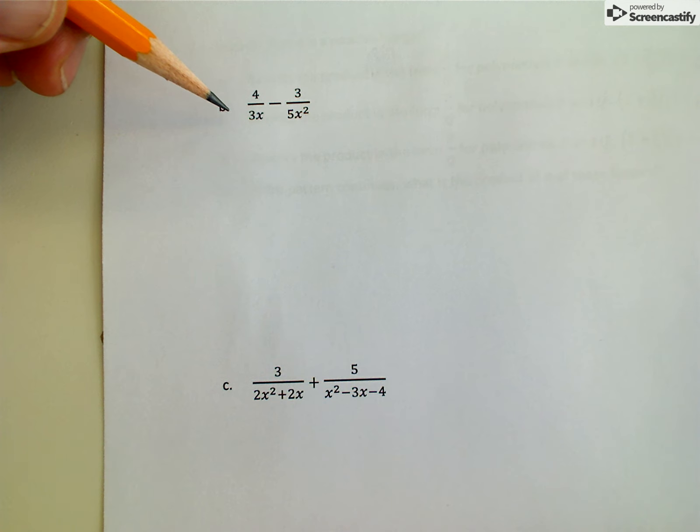And so I have to think about what the common denominator might be, and I want the least common multiple of 3x and 5x squared. Well, the first thing I'll notice is that there's an x here on the first denominator of the first rational expression, and an x squared over here.